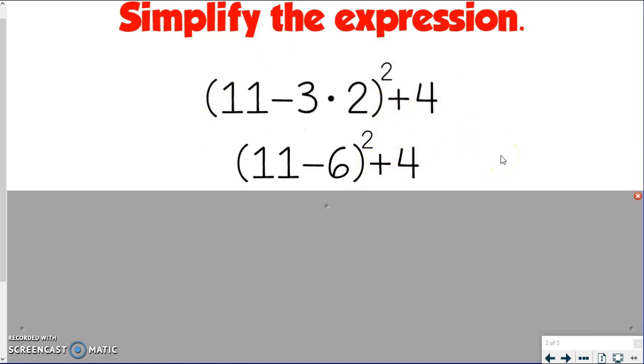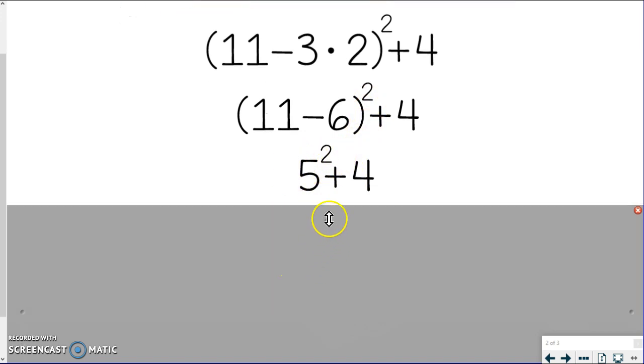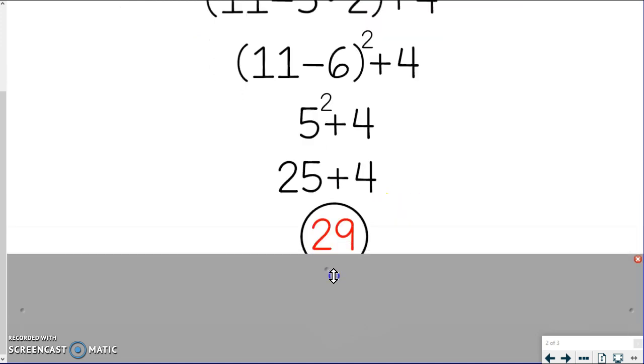So now I have to do the 11 minus 6 to get 5. And now it's OK to not write your parentheses, but you do still need to bring that exponent right along. And it goes right with the 5. Now I can do that exponent to get 25. And then 25 plus 4, 29, again, circling my answer.